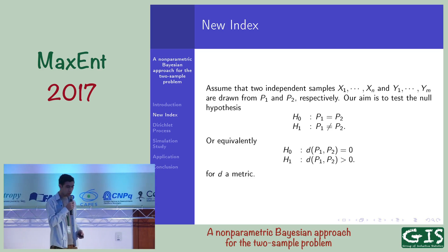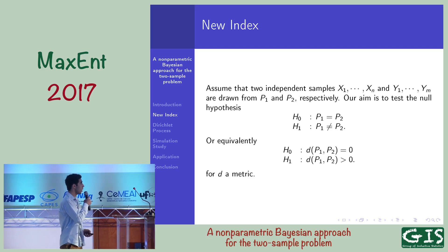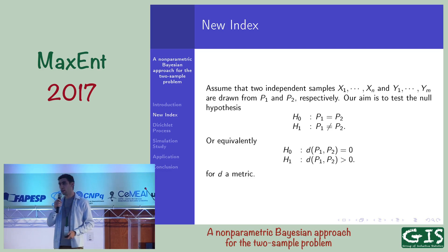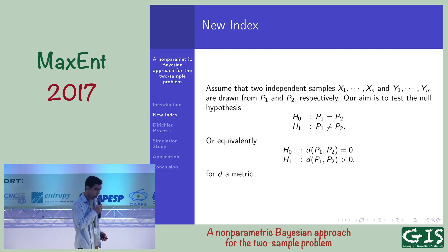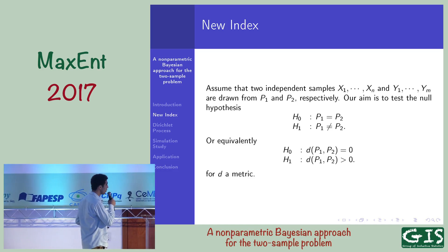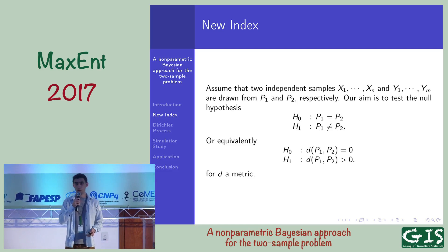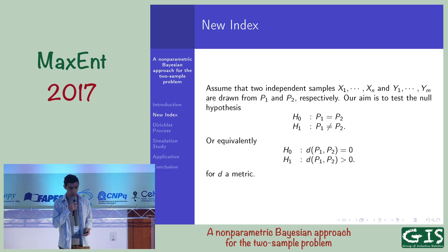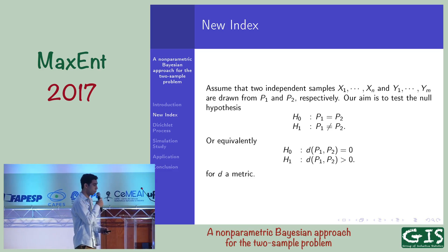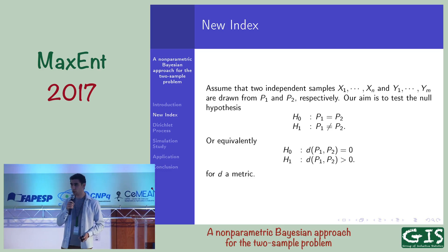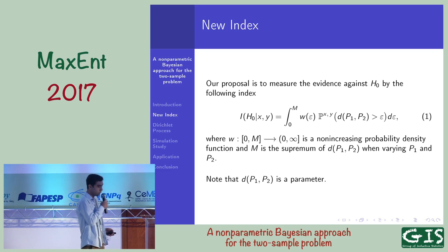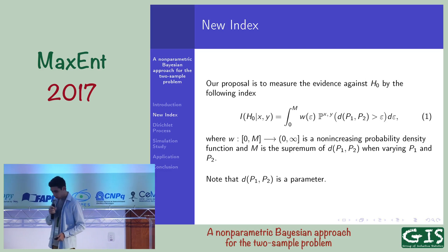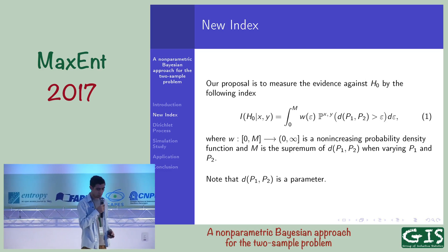Our aim is to test the null hypothesis H0: the populations are equal, against the alternative hypothesis H1: the populations are different. This is equivalent to testing H0: the distance between the populations is 0, against H1: the distance between the populations is greater than 0. Our proposal is to measure the evidence against H0.